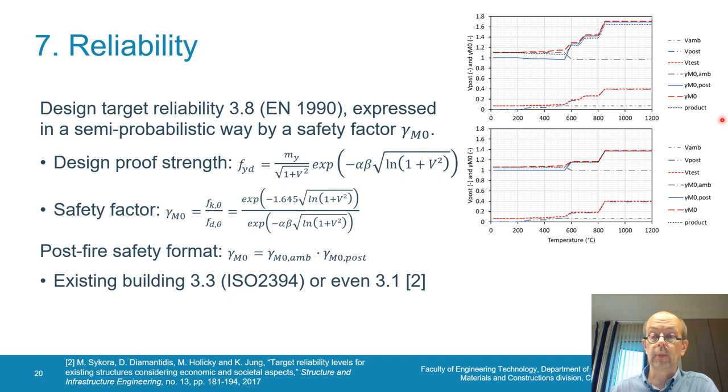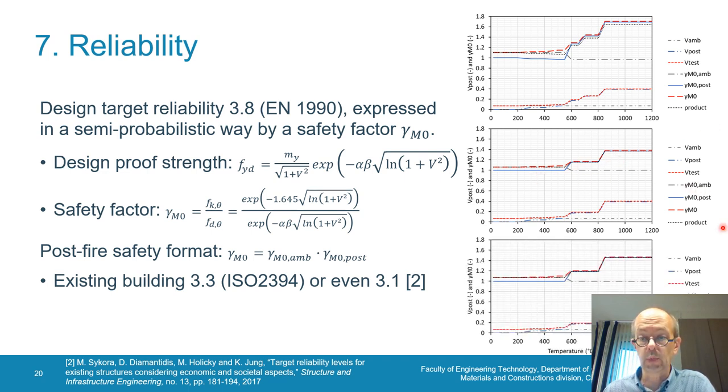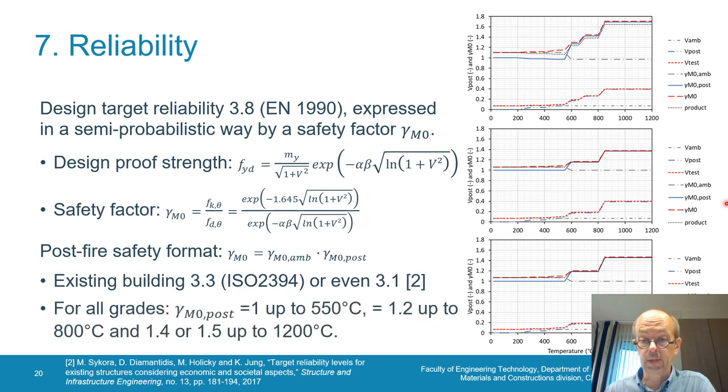At the moment that we descend our reliability index to 3.3, because it's an existing building. Of course, it has been submitted to fire, so it should be existing, otherwise it's not possible. Then we arrive to this figure. And we can do even the same with 3.1, which is also suggested in literature. And we see that the difference between 3.3 or 3.1 is not so important. Moreover, we see that our factor, which is the post-fire factor, becomes about 1 up to 550, and it's about 1.2 up to 800 degrees Celsius.